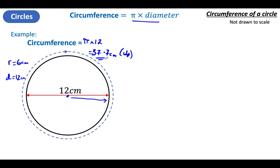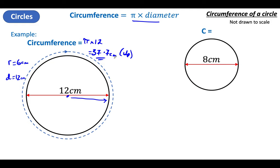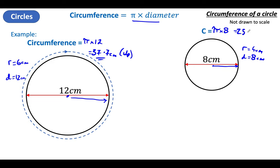The distance all the way around the circle is 37.7 centimeters to one decimal place. What about this one? Let's write down R equals, D equals. This is a diameter — it goes all the way across — which means my radius will be half of that, from the center to the outside. Circumference is Pi times diameter, so it's Pi times 8. Just put it in your calculator — 8 times Pi is 25.1 centimeters to one decimal place.